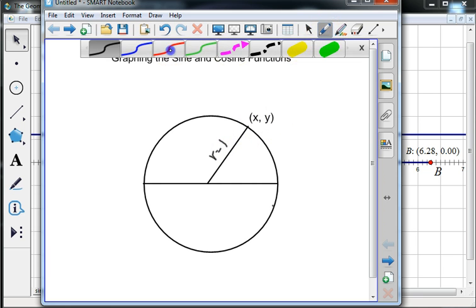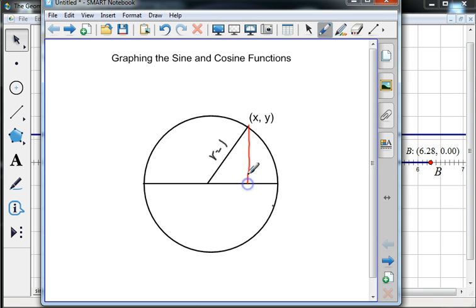And if I draw a little segment straight down that forms a right triangle, then this vertical distance is y. This horizontal distance is x. So from the origin, I go out x, I go up y, and I hit the point (x, y).